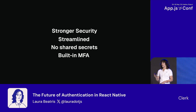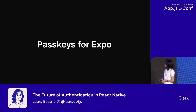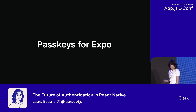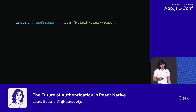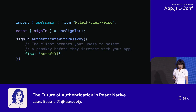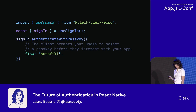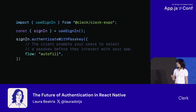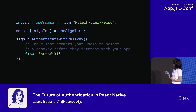So we know the concept — how can we implement it? At Clerk, we have developed a package for handling passkeys with Expo, leveraging our front-end API and Expo native modules. It's a matter of importing a single React hook. With the useSignIn return value, you can call a method called authenticateWithPasskey. You can also choose which flow mode you want to use. If you want to leverage the latest iOS 16 autofill mode, you can do so, and it's going to trigger the prompt for your user so they can start interacting with your app.